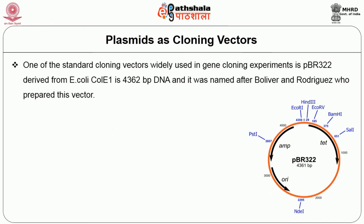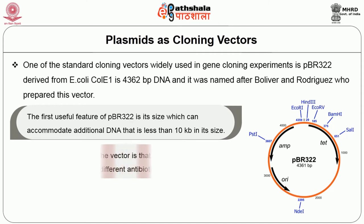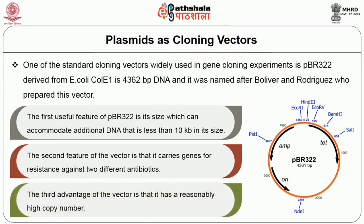One of the standard cloning vectors widely used in gene cloning experiments is PBR322, derived from E. coli, which is 4362 base pairs of DNA. It was named after Bolivar and Rodriguez who prepared this vector. Its first useful feature is its size, which can accommodate additional DNA less than 10 kb. The second feature is that it carries genes for resistance against two antibiotics: tetracycline and ampicillin. The third advantage is its reasonably high copy number.